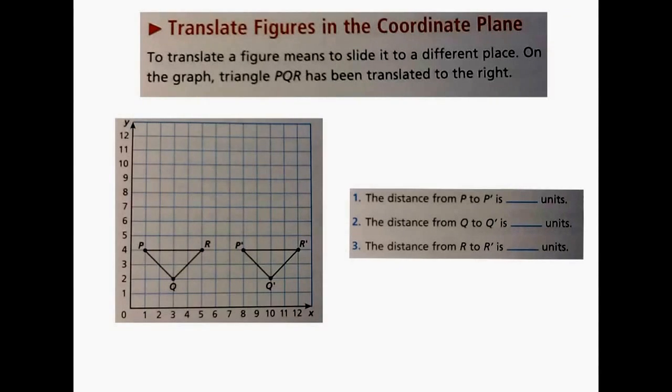Here on this slide, we're going to be learning about how to translate figures in the coordinate plane. To translate a figure, you're sliding it to a different place. So you can see on the graph here, we already have a triangle titled PQR that has been translated, or we used sliding to move it to the right. Now, the first question asks us on number 1, the distance from P to the second point P is blank units. So one way to figure this out is I can count from this first point P to the second point. When I do that, I count 1, 2, 3, 4, 5, 6, 7 spaces over. So I know the distance from the first point P to the second one is 7 units.